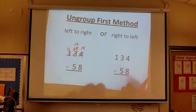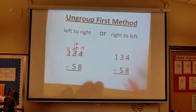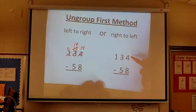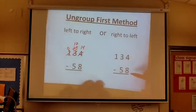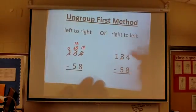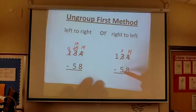I can also do my ungrouping right to left, just like we did with the expanded method. 4 ones minus 8 ones, that won't work. I need to take one of these tens and take this 4 and turn it into a 14. Now I'm going left to right, so I'm checking my tens column. 2 tens minus 5 tens, that won't work. I need more tens. So instead of 2 tens, let's make it 12 tens.